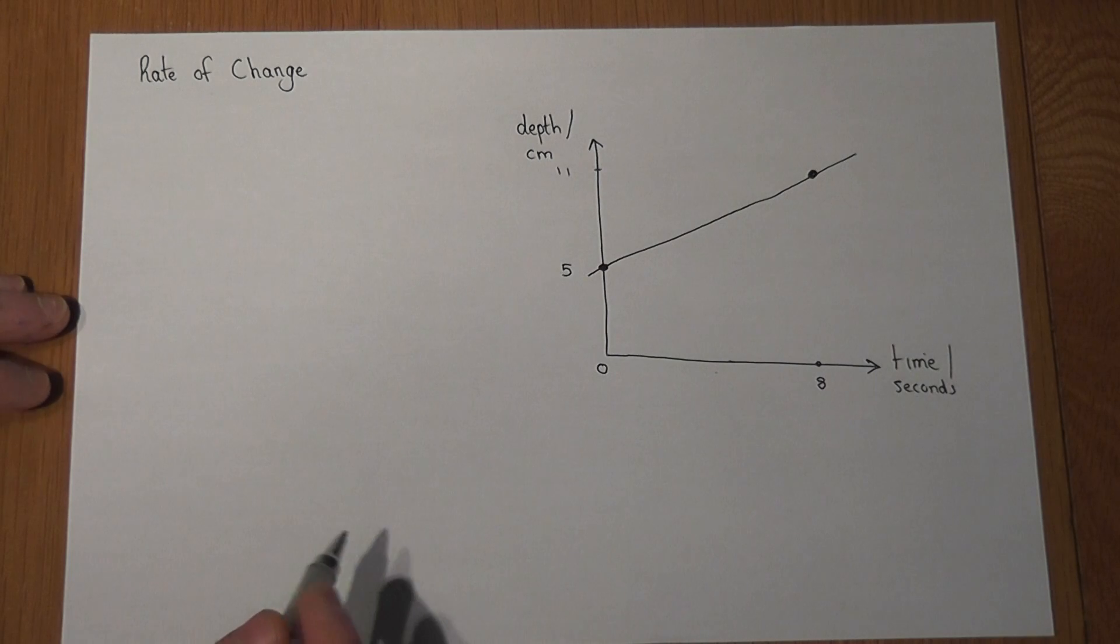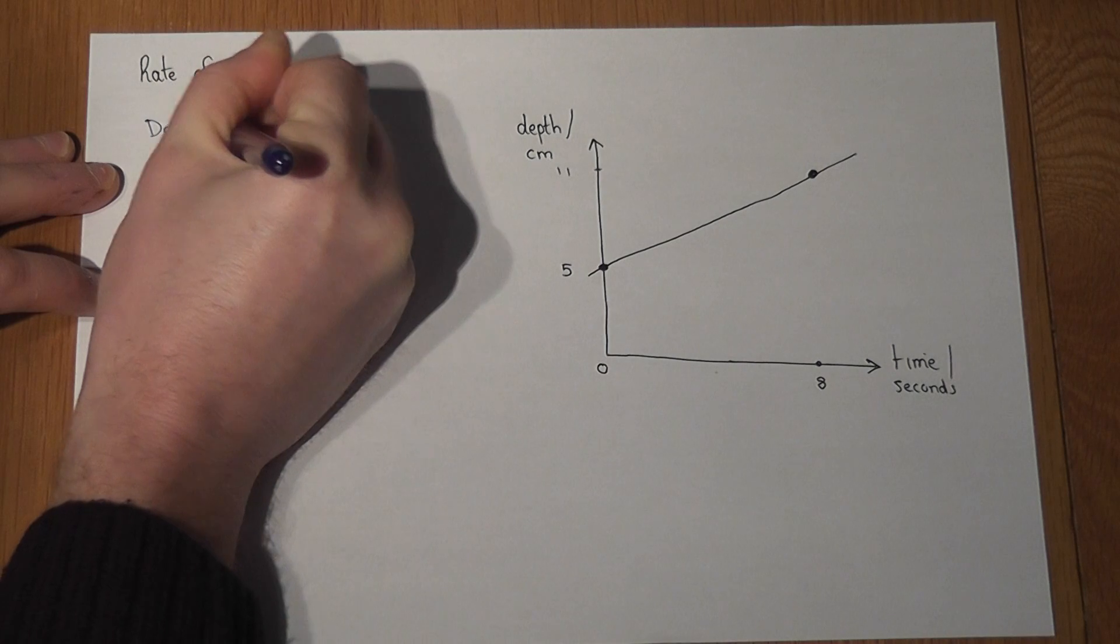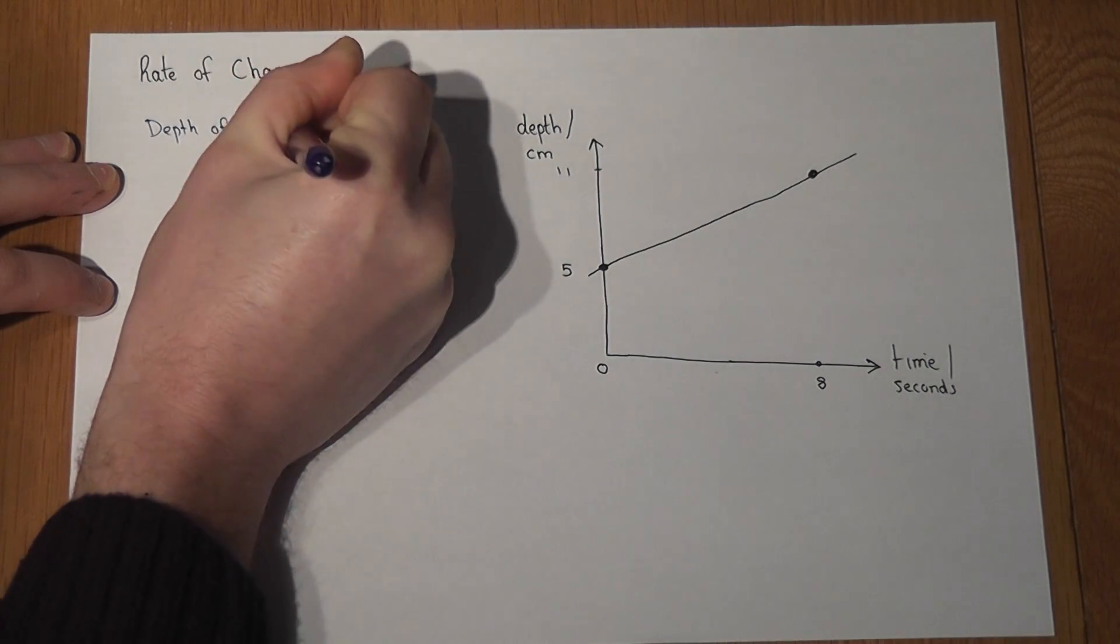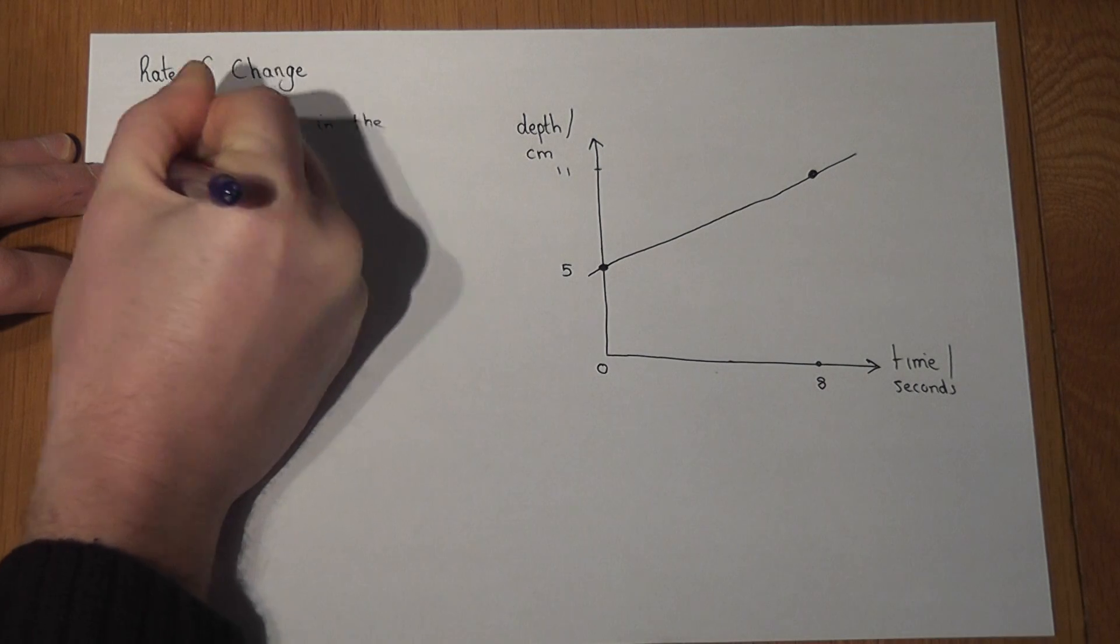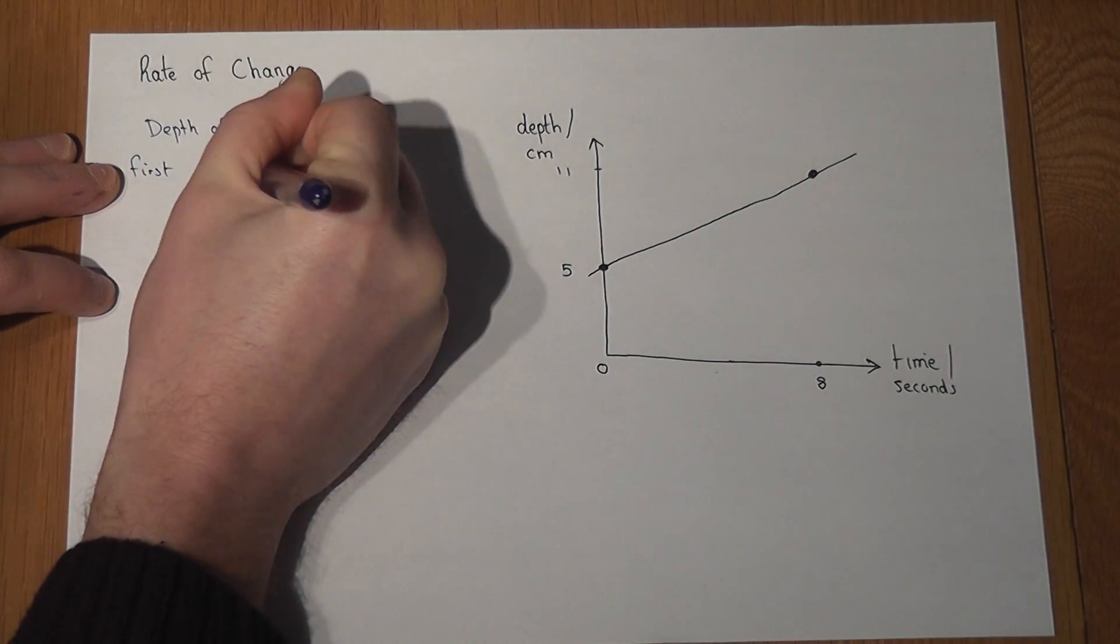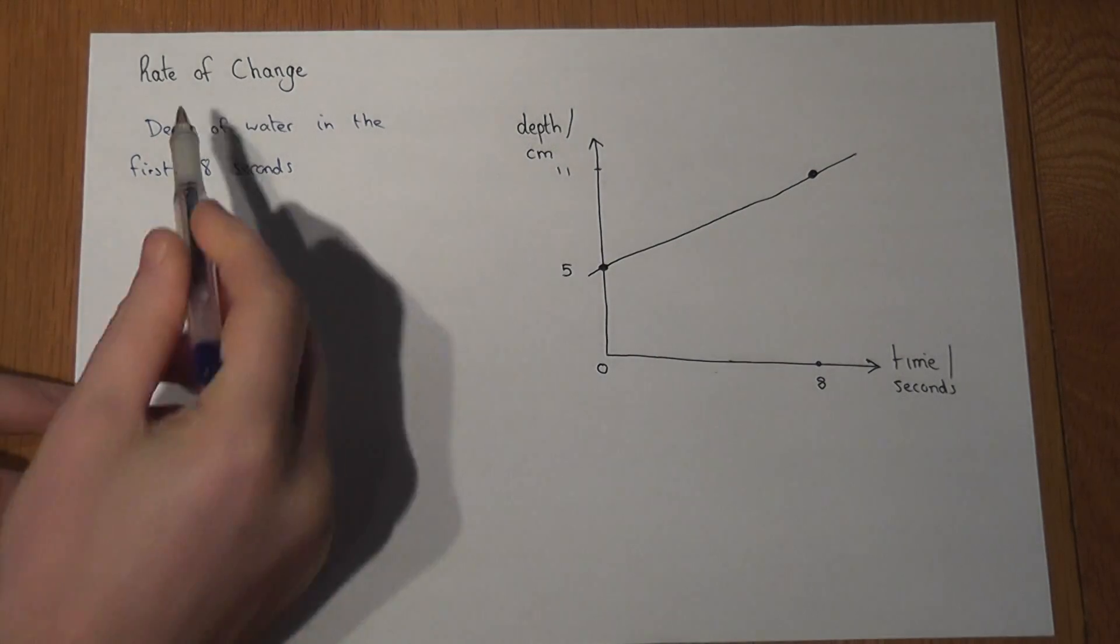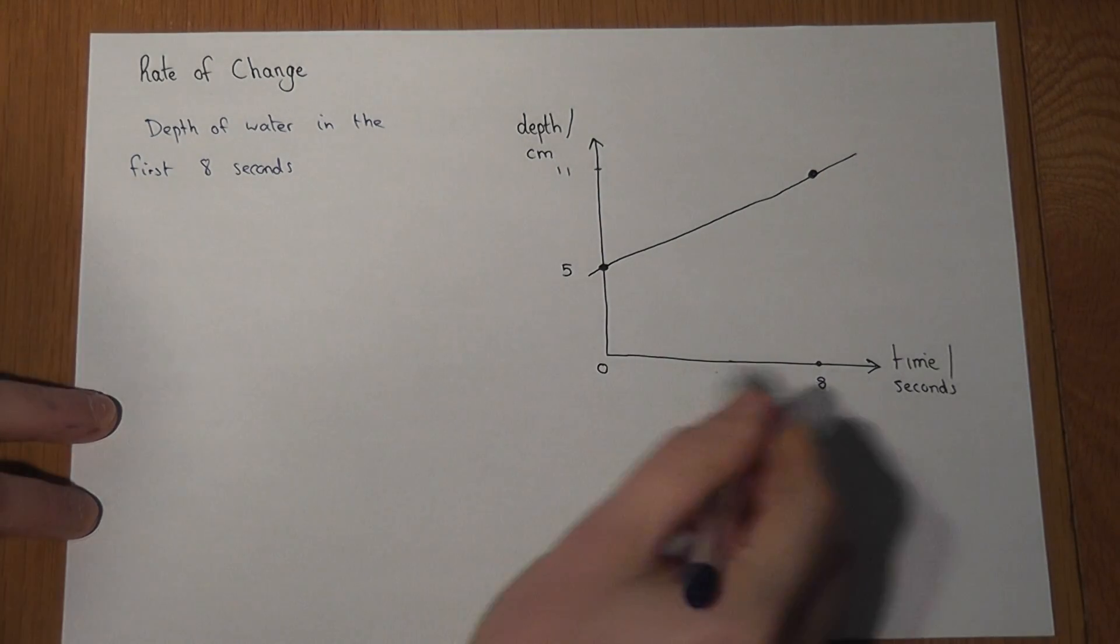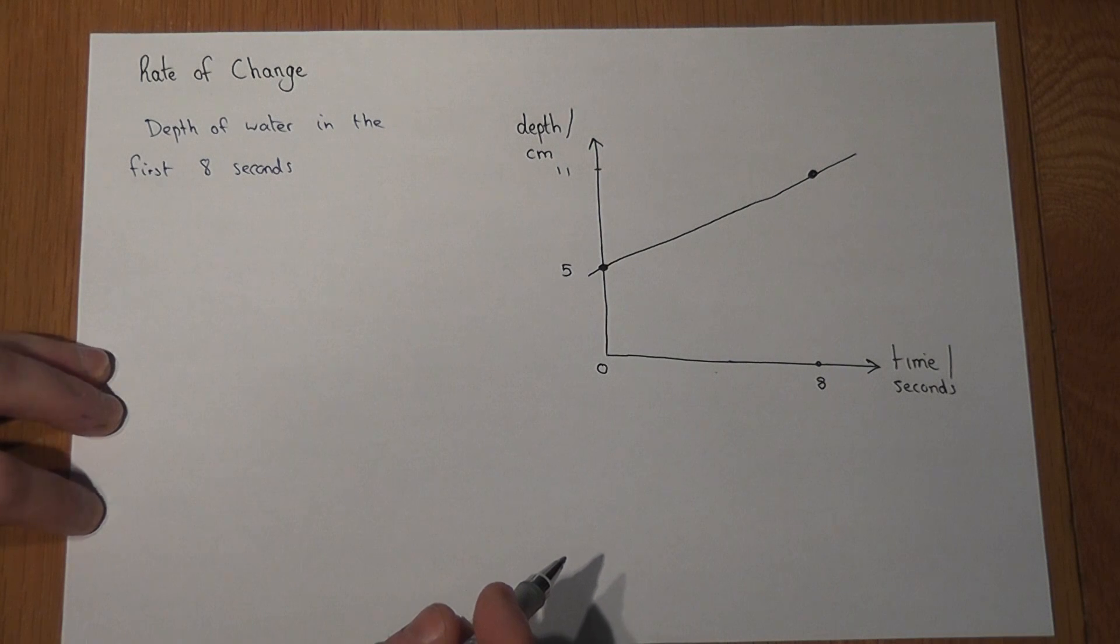The question could ask for the rate of change of the depth of water in the first eight seconds. Now to find this out we do a really simple calculation and it involves gradients.